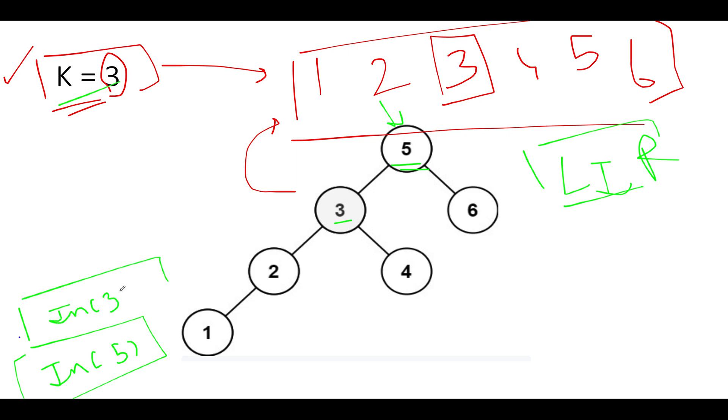Since five has the left child as three, recursively we will first invoke inorder on three. Then three also has two as its left child, so inorder of two will be invoked. Since two also has a left child which is one, inorder of one will be invoked. You can see that the left child of one is null. Now it's time to visit the info node. That node is one.